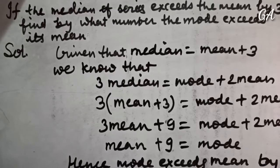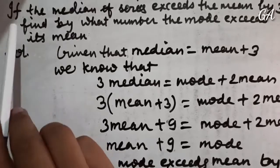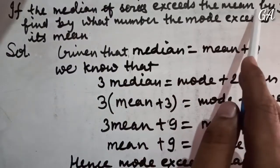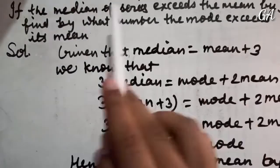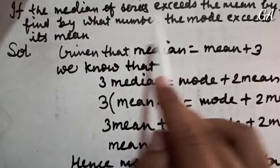Welcome to my channel. In this video we're going to solve this problem: if the median of a series exceeds the mean by 3, find by what number the mode exceeds its mean.